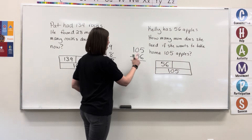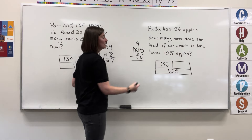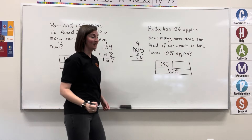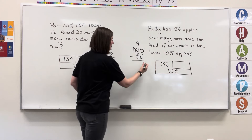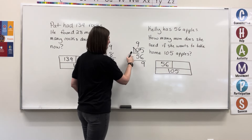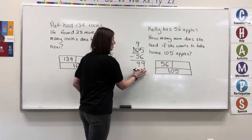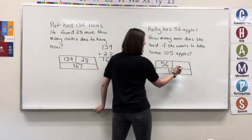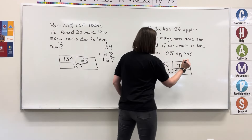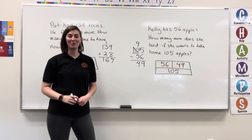5 minus 6 — can't do it, go next door. 10 becomes 9, 5 becomes 15. 15 minus 6 equals 9 — write the 9. 9 minus 5 equals 4 — write the 4. She needs 49 more apples to get her to her goal.